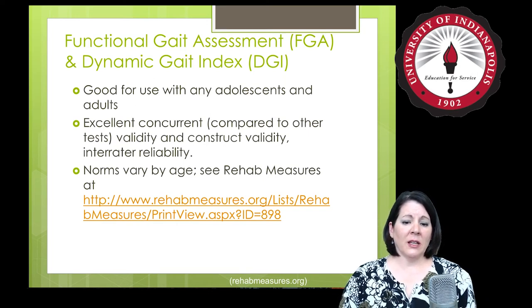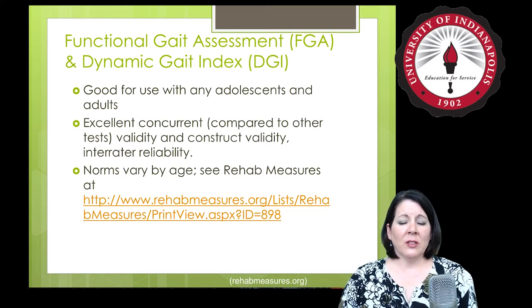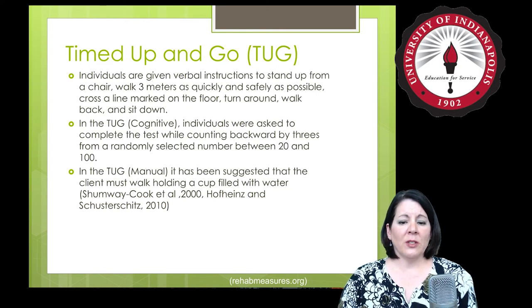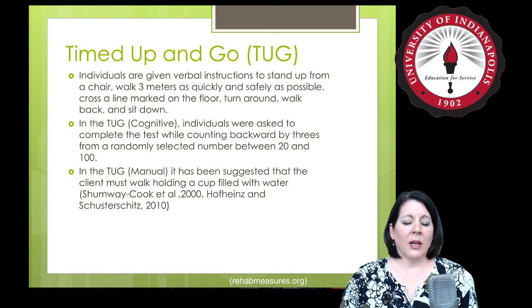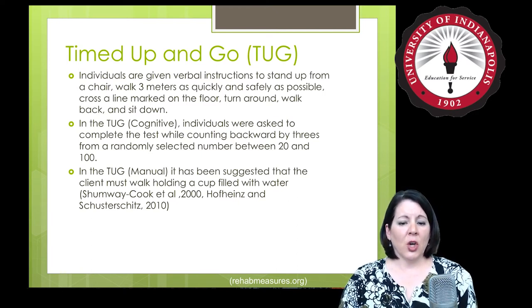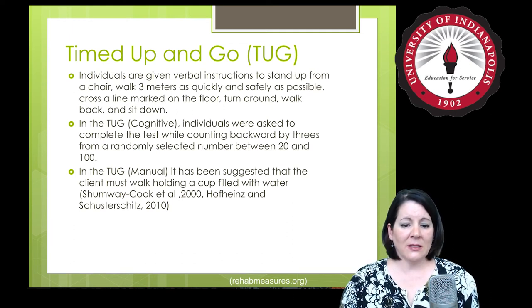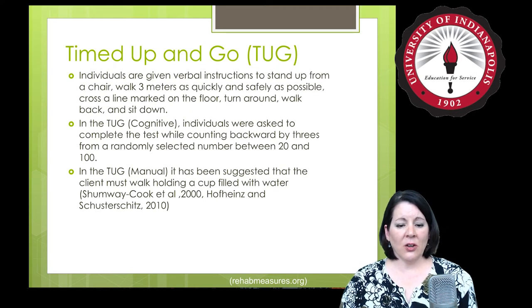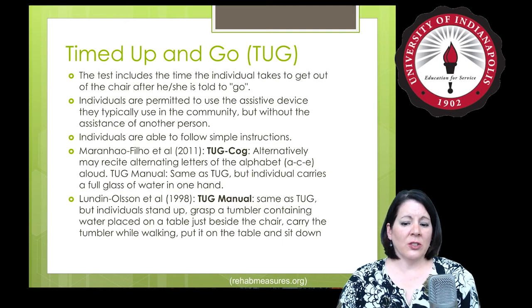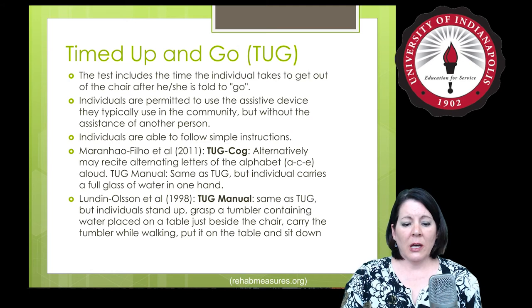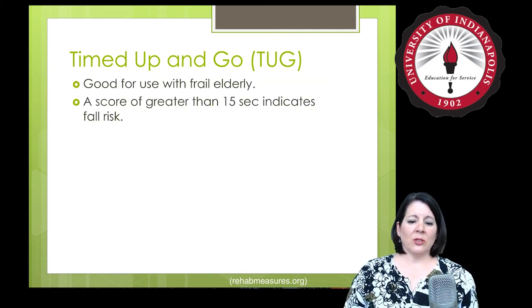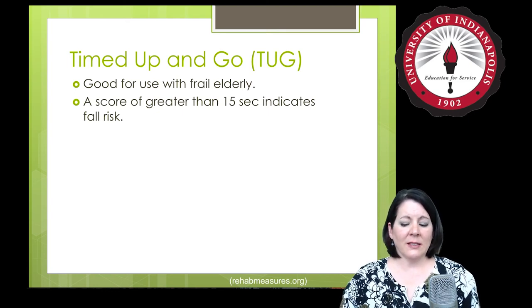The Functional Gait Assessment and Dynamic Gait Index are appropriate for adolescents and adults. For frail older adults, the Timed Up and Go test may be preferable — it lets us see fall risk based on performance. Cognitive and manual components have also been added to the TUG: counting backwards by threes for the cognitive version, or carrying a cup of water for the manual version. These haven't been formally normed but allow observation of dual-task performance.